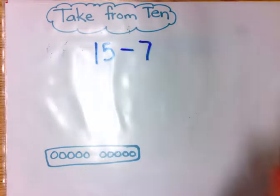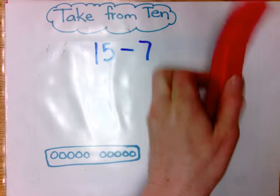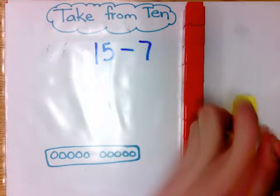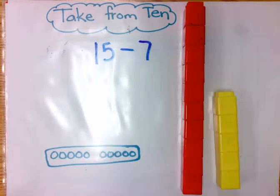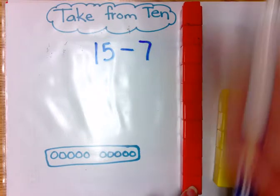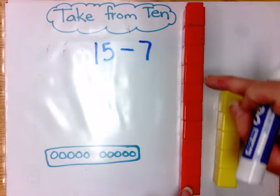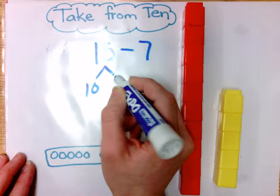I have my 10, and I have 5. For students that know how many they have left when they take 7 from 10, this can be a fast problem.